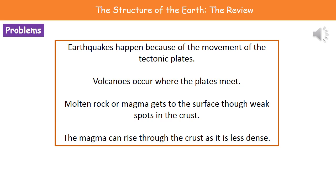Because the tectonic plates are moving, we can get some problems associated with that. The first one is earthquakes — earthquakes happen because of the movement of those tectonic plates. We'll also have volcanoes where those plates meet. With volcanoes, molten rock or magma is able to get to the surface through the weak spots in the crust. The reason that magma rises to the surface is because it's less dense.